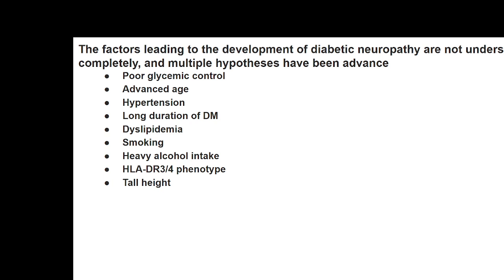The factors leading to diabetic neuropathy are not completely understood, and there are multiple hypotheses. Clinically important risk factors include: poor glycemic control — uncontrolled sugar greatly increases the chance of developing neuropathy; advanced age, particularly above 60; and duration of diabetes — patients with diabetes for 5 to 6 years or more have increased chances of developing neuropathy.